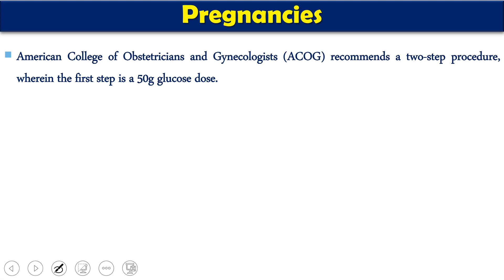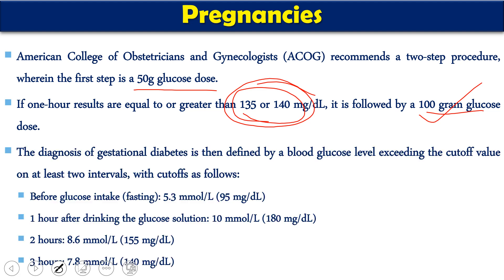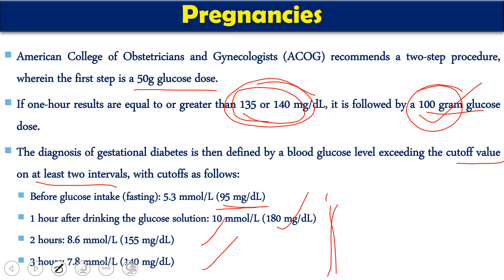In the case of pregnancy, according to the American College of Obstetricians and Gynecologists, a two-step procedure is recommended. The first step is the 50-gram glucose test: if the one-hour result is equal to or greater than 130–140 mg/dL, we proceed to the second step — the 100-gram glucose test. The diagnosis of gestational diabetes is then defined by glucose levels exceeding the cutoff values at two or more time intervals: before fasting it should be less than 95 mg/dL; and cutoff values apply for the one-hour, two-hour, and three-hour samples. If glucose levels exceed these values, gestational diabetes is confirmed.